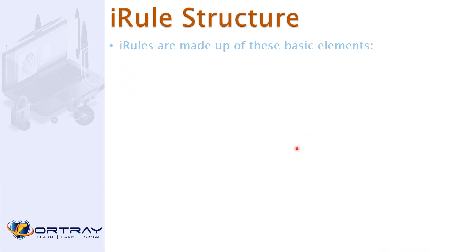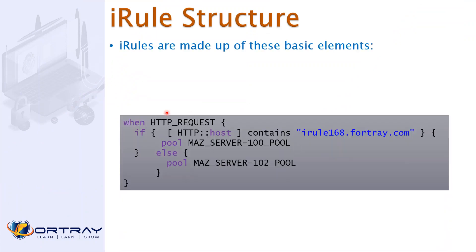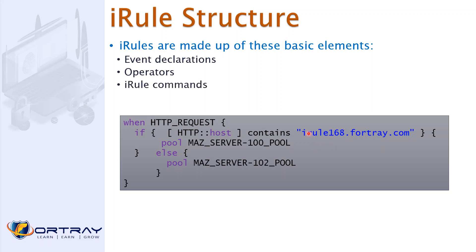Looking at the iRule structure: when an HTTP request comes in, if the HTTP host contains 'irule168portrait.com' it will be served by one pool; if not, it will be served by another pool. So the iRule has three basic elements: the event declaration, the operator, and the iRule commands.